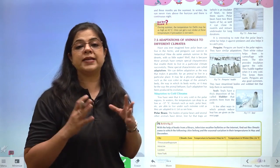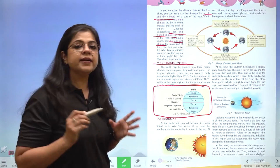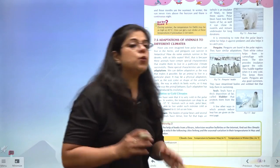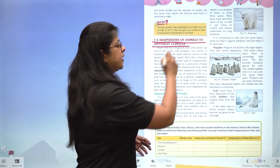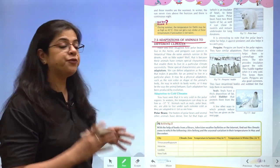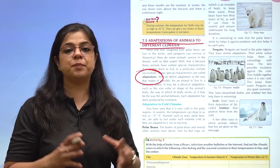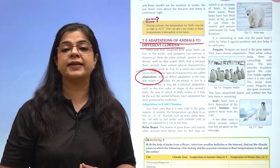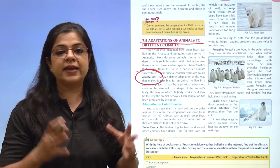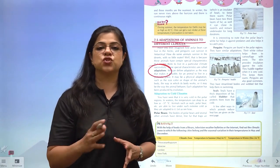Depending on the place we live in, each climate zone ke andar temperature, humidity, rainfall, and wind conditions yeh sab different hongi. So in these conditions, jo animals reh rahi hain, unke body features different hongi. These body features of different animals are called adaptations. Adaptations help different animals and plants to survive in different kinds of climatic conditions, kyunki unke paas human beings ke jaise na cold weather ke clothes hain, na rainy weather ke clothes hain, aur na summer clothes hain. So they have to adapt their own body to survive in such extreme changes.